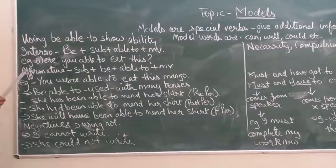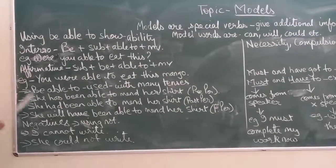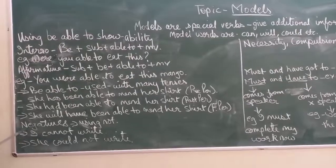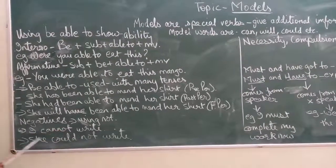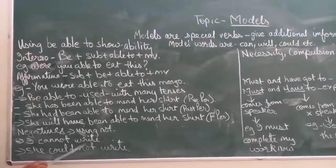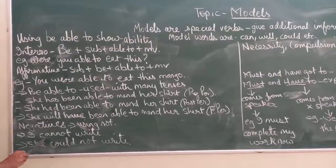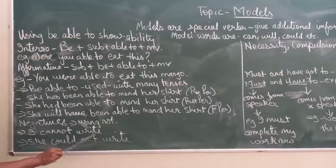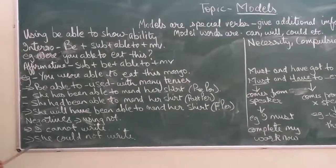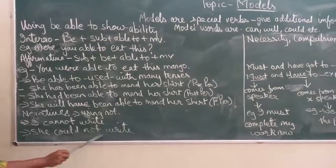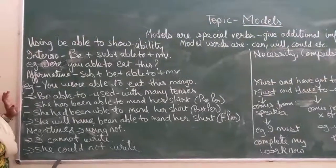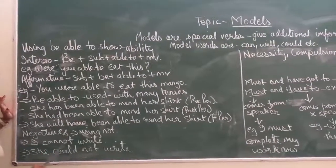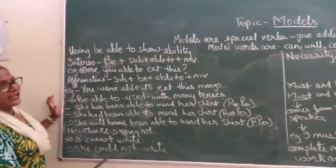As we have seen interrogative and affirmative sentences, we will see negative sentences also. While using negative sentences, we use not. For example, 'I cannot write' — can is your modal and you are adding not. Another example: 'She could not write' — could is your modal and you are adding not. So these sentences are in negative form.